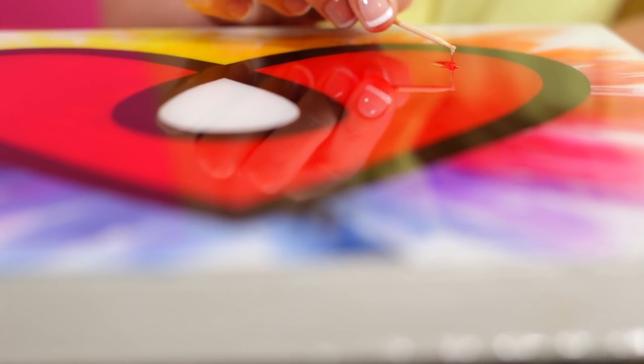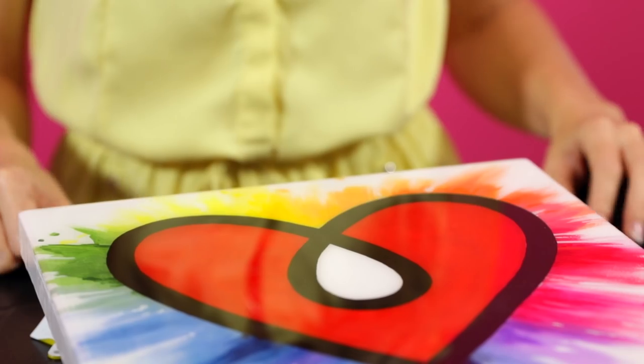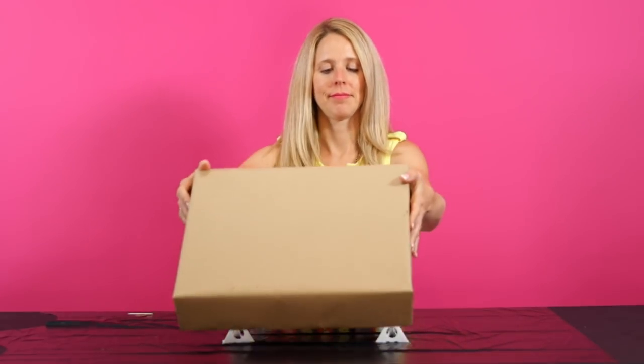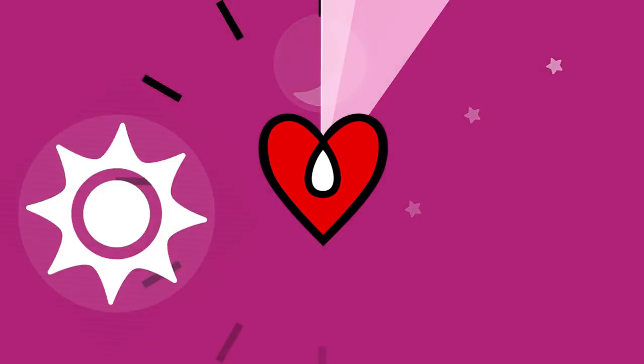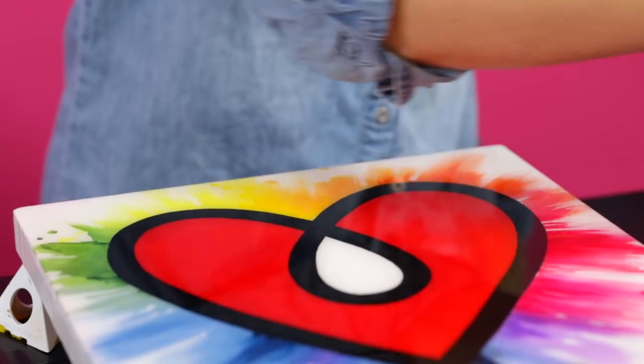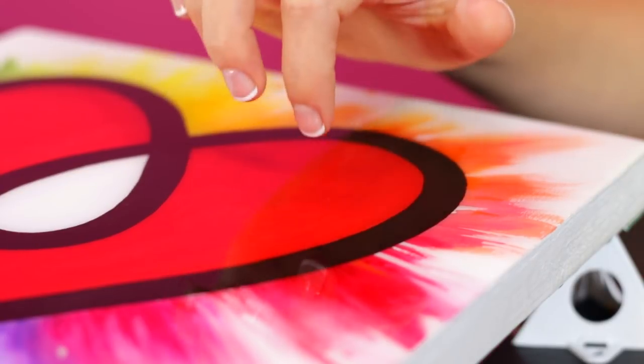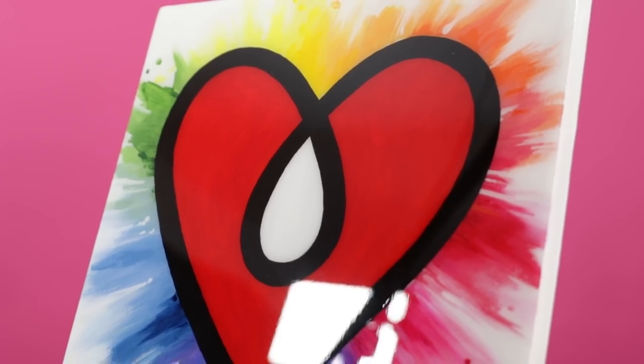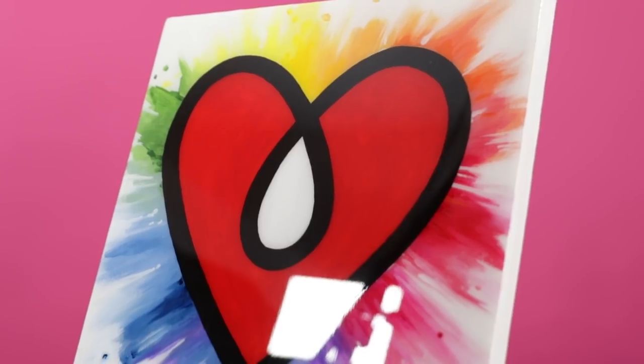Pick out any hairs or dust particles with a toothpick, and then cover the piece with a box to protect it from dust and let it sit overnight. In about 24 hours, your piece will be hard to the touch. After 72 hours, it will be fully cured. And don't forget, cure time will be decreased in a warmer room.